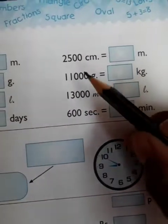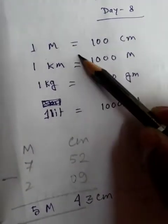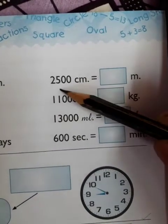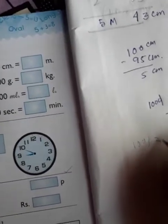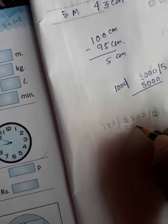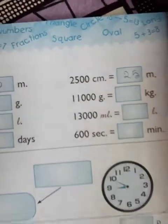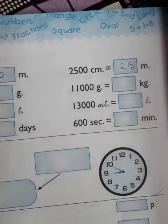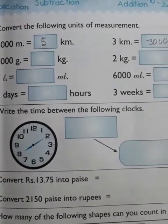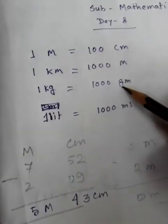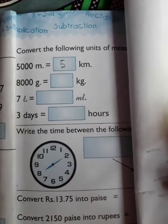Next: 2,500 centimeters equals how many meters? We divide 2,500 by 100, which gives 25. So 2,500 centimeters equals 25 meters.